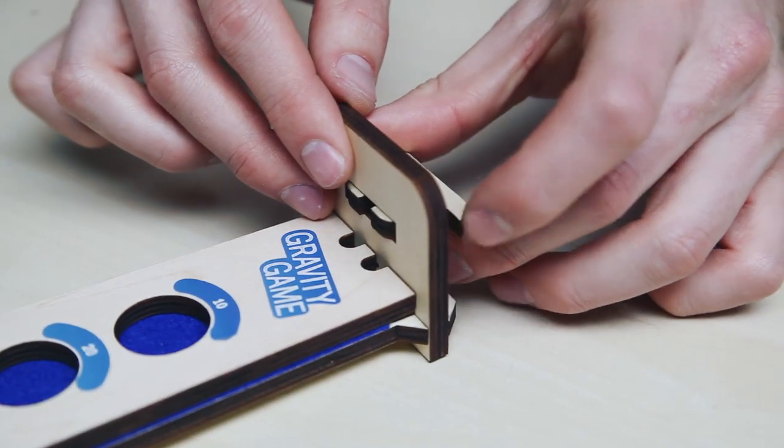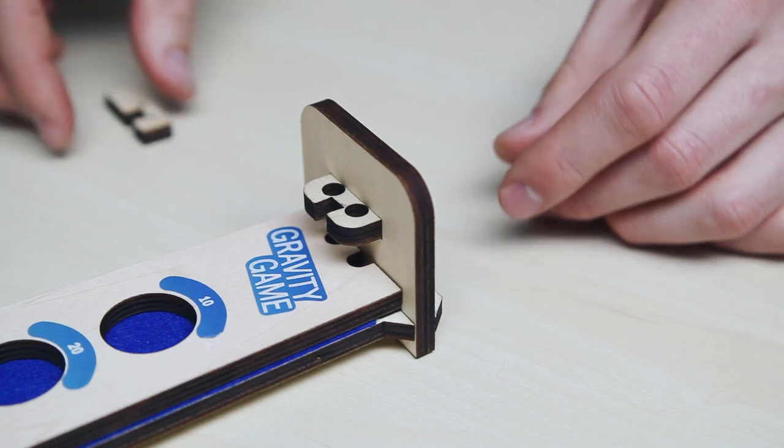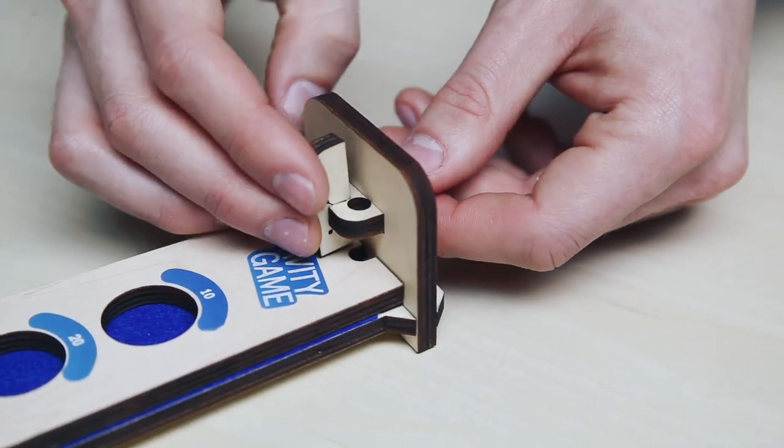Slide the locking piece with two holes through the narrow end, then secure it in place with the other locking piece.